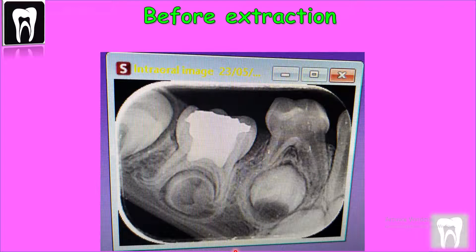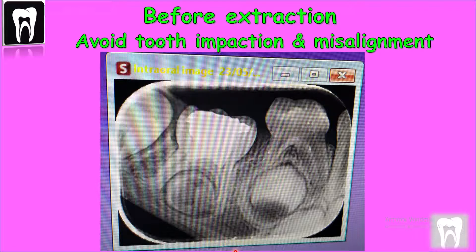We should have enough space for the permanent premolar so we can avoid tooth impaction and misalignment of the other teeth.